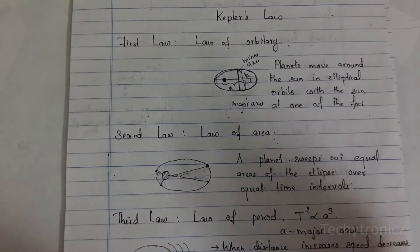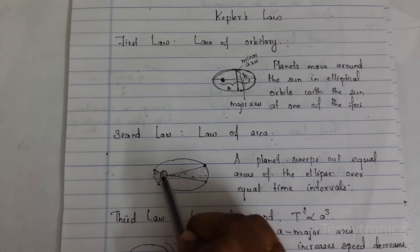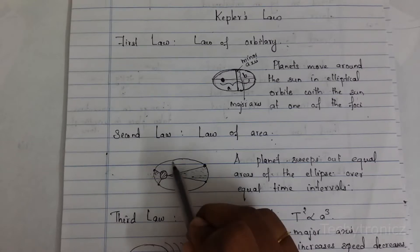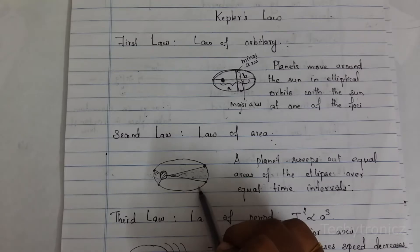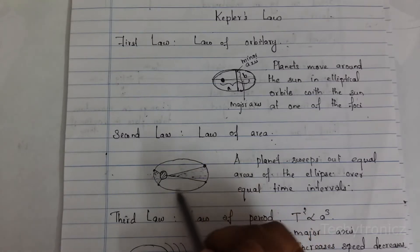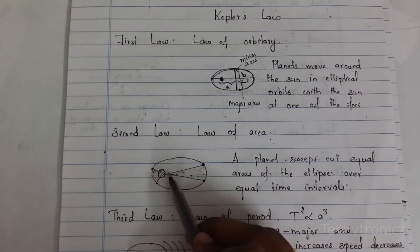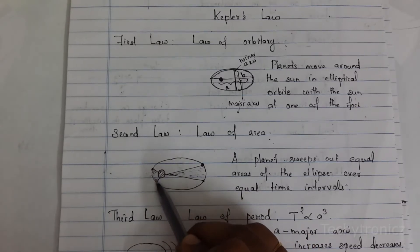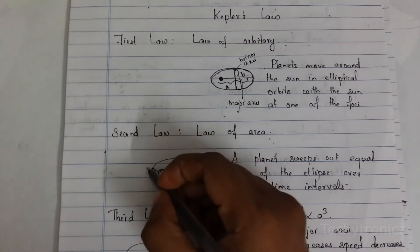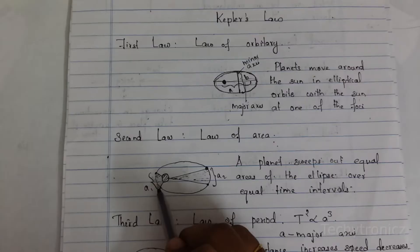The meaning is: consider this — here is the sun, and the planet is revolving around the sun in the form of an elliptical path. Consider area A1 and consider area A2. The planet sweeps these equal areas in equal time intervals.